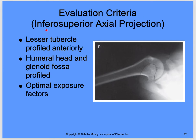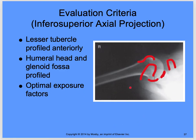The evaluation criteria for the inferior superior axial: the lesser tubercle is profiled anteriorly. Here is the greater tubercle, here's the lesser tubercle, here's your acromion, here's your coracoid, and then you can see this glenoid humeral cavity right in there. The humeral head and glenoid fossa are profiled with optimal exposure factors — you want your shades of gray for an optimal image.